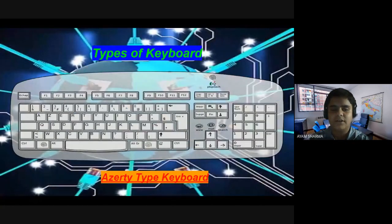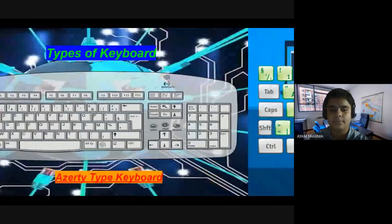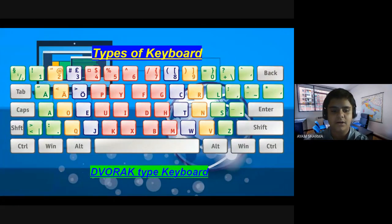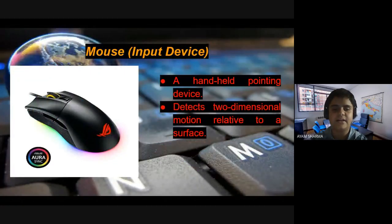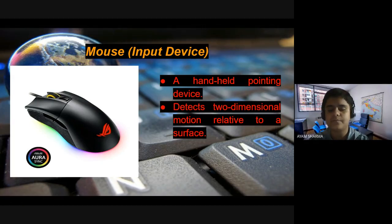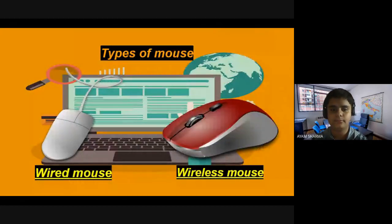There is also the AZERTY type of keyboard and the Dvorak type of keyboard. The mouse is a hand pointing device which detects two-dimensional motion relative to a surface. There are two types of mouse: a wired mouse, which is directly connected to the computer, and a wireless mouse, which connects to the computer through Bluetooth.